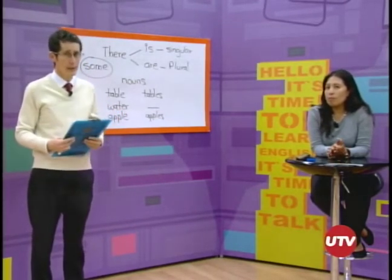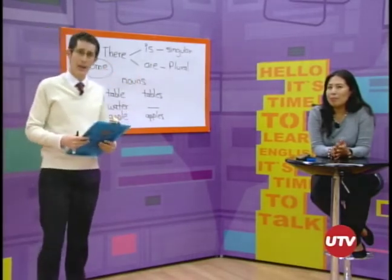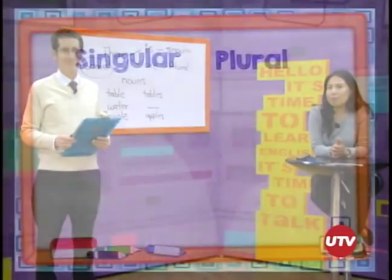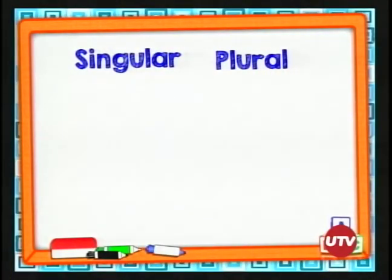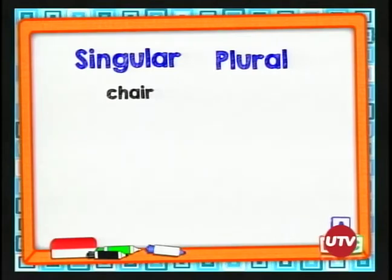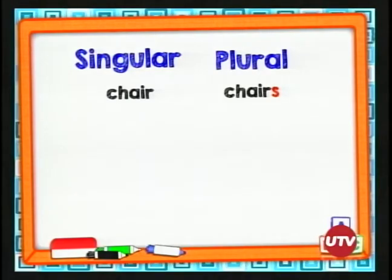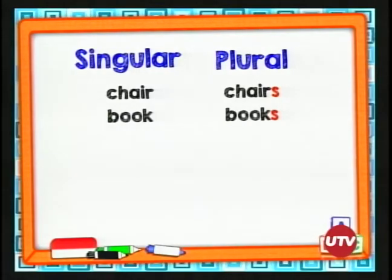La teacher Anita nos va a ayudar a resolver los siguientes ejemplos. Vamos a ver una pequeña revisión antes de ir a los ejercicios. Tenemos singular y plural. Para singular: there is; para plural: there are. Vamos con unos ejemplos: en singular, "chair" — el plural sería "chairs"; solo le añadimos la S. Otro ejemplo: "book" — el plural sería "books". Para hacerle plural, solo le aumento la letra S.